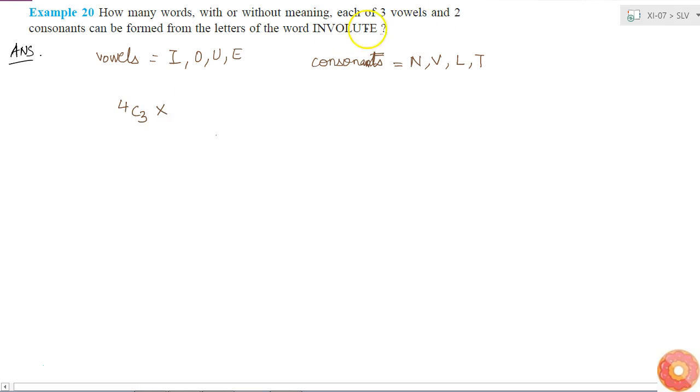And the ways of getting two consonants from these four different consonants is 4C2. So now these are the different ways in which I can select five letters such that there are three vowels and two consonants.